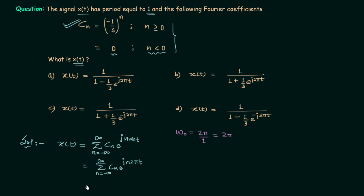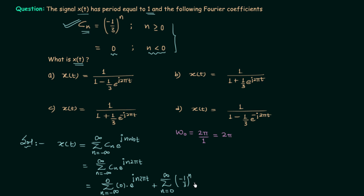I will break the summation into two different parts. In the first part we have summation n from minus infinity to 0, and since c_n = 0 when n < 0, this part gives us 0 times e^(jn2πt). The second part is summation n from 0 to infinity, where c_n = −(1/3)^n, giving us −(1/3)^n multiplied by e^(jn2πt).